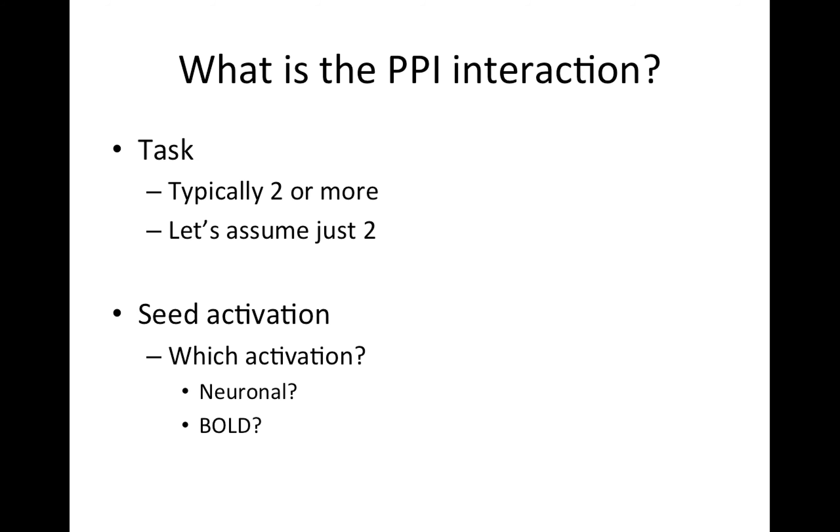So what is this PPI interaction? Just to define a few things, you have your task. Typically, two or more tasks are going to be in play. For now, I'm going to assume that you just have two tasks. And then you're going to have your seed activation. And as I alluded to a second ago, which activation are we interested in? The neuronal thing, which we don't have access to, or the bold thing that we do? Spoiler alert, life isn't easy, and we actually can't work directly with the bold data in this case.